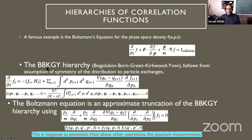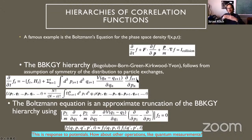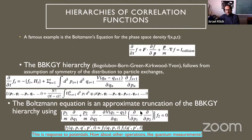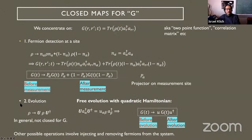The Boltzmann equation is part of the BBGKY hierarchy. In this hierarchy the derivative of the joint s-particle correlation function f_s depends on something like Hamiltonian evolution plus a term depending on the (s+1)-particle correlation function — that's why it's a hierarchy. The s-particle function depends on s+1, which depends on s+2, going to infinity. We cannot solve it exactly; the way we usually proceed is to truncate this hierarchy at some point.